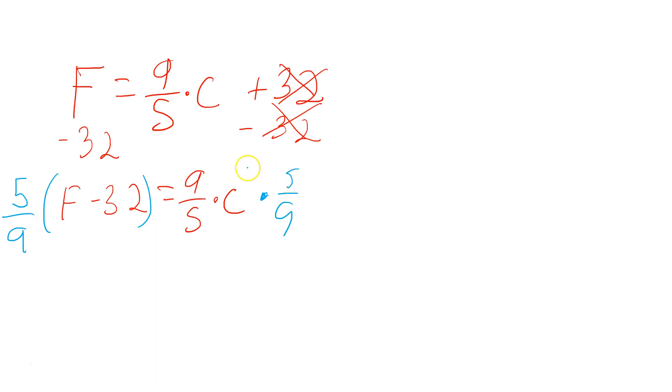Then you cross off. On the right side, cross off this 9 with this 9. Cross off that 5 with that 5. And this is all you really need to do. So you end up with the following, that 5 ninths multiplying F minus 32 equals C.